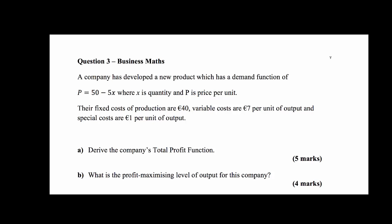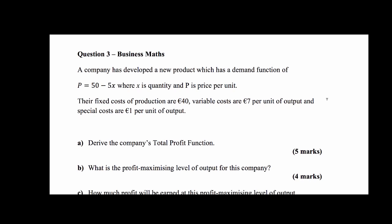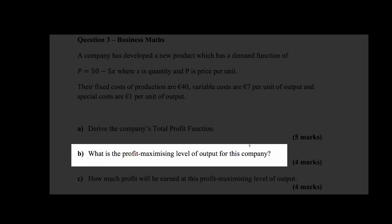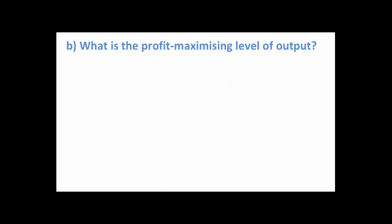I'm going to continue on with this question and this is the second part of a series of short videos in which I'm going to address some of these exam type questions. So in this one, we're going to look at calculating the profit maximizing level of output for the company. So what is the profit maximizing level of output?